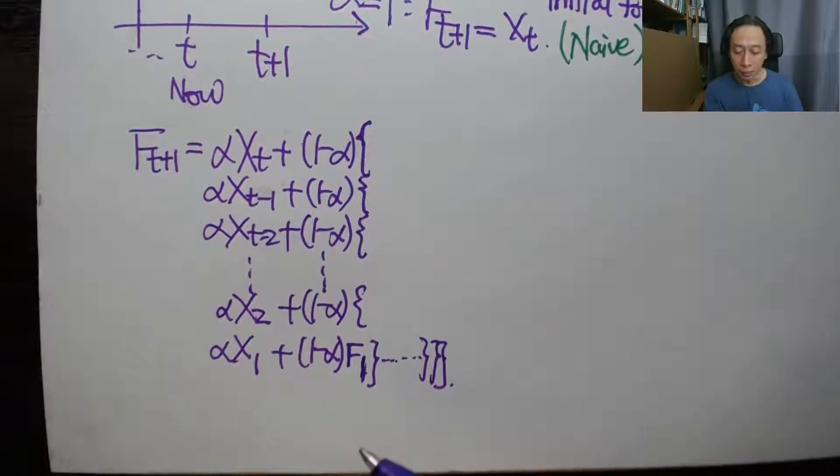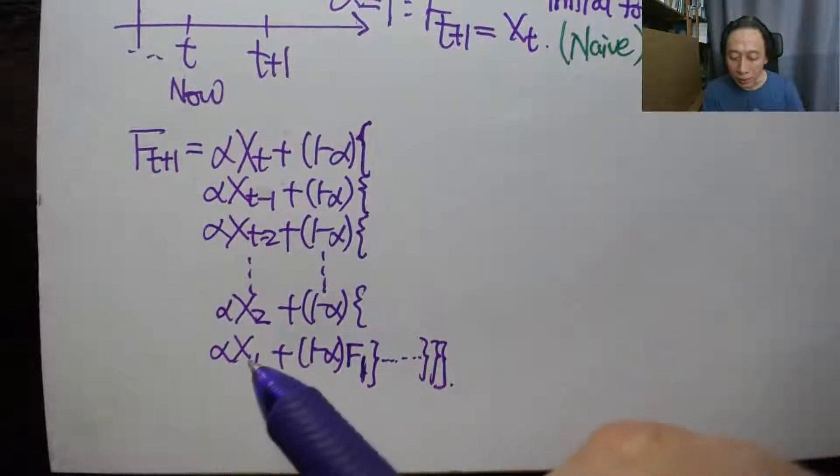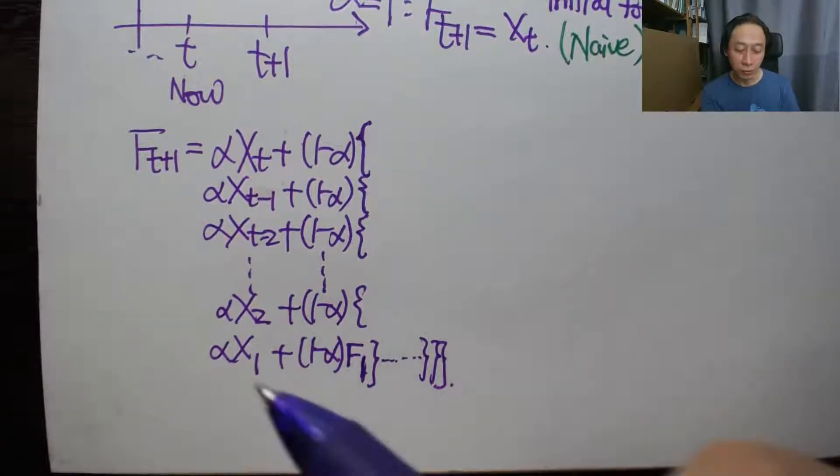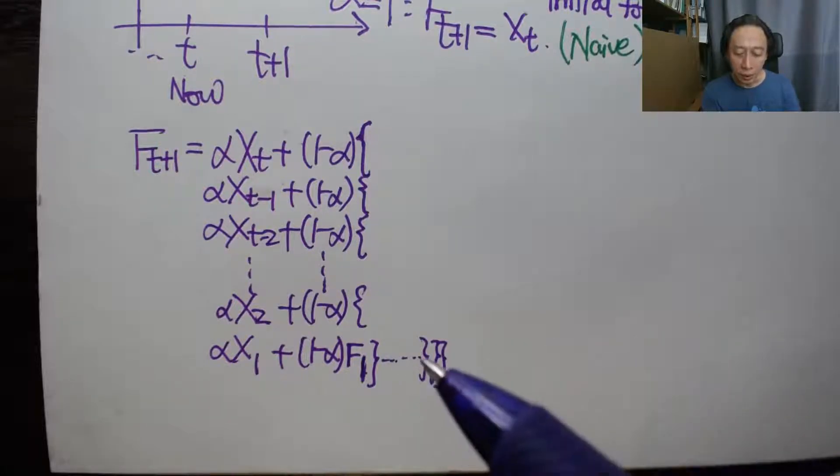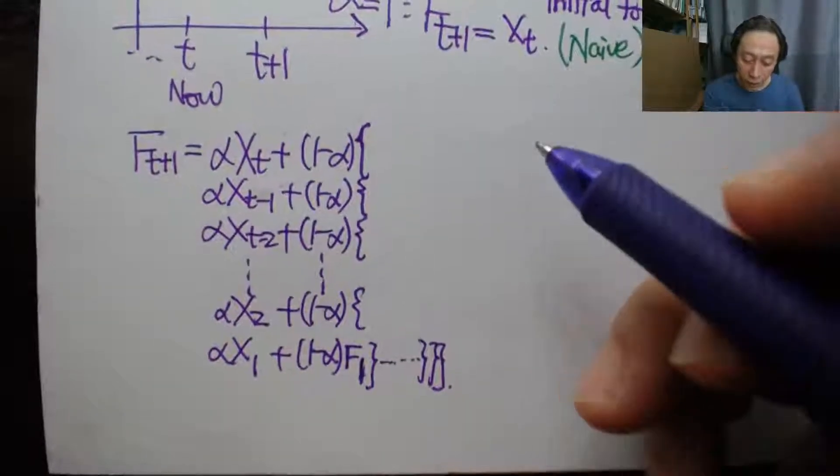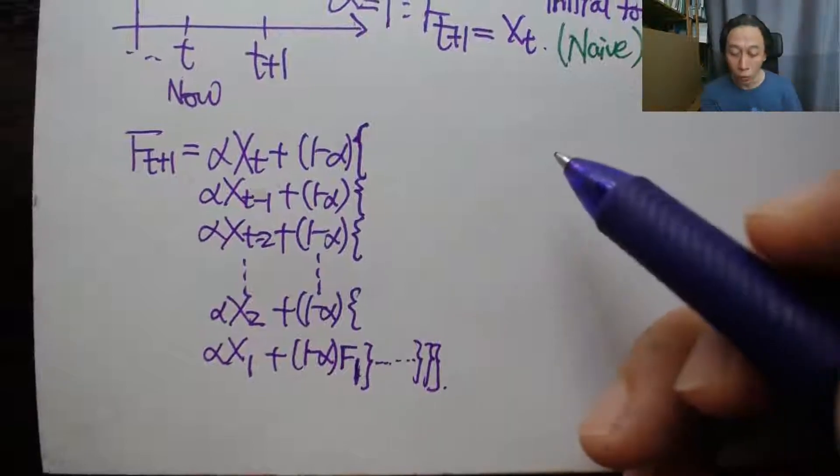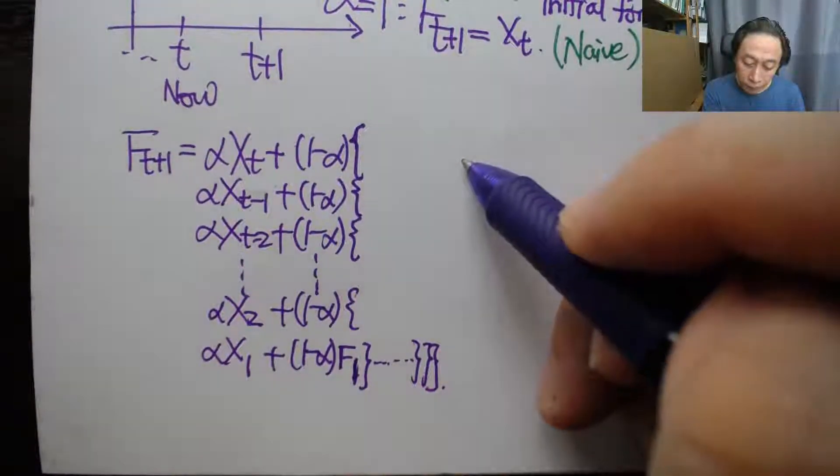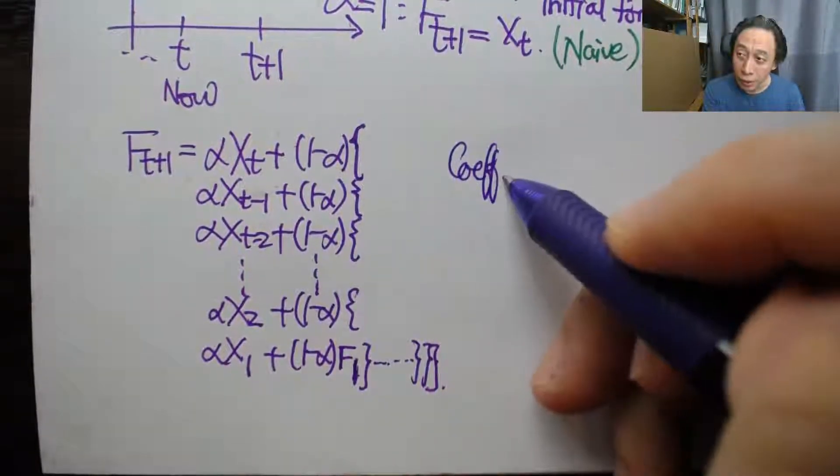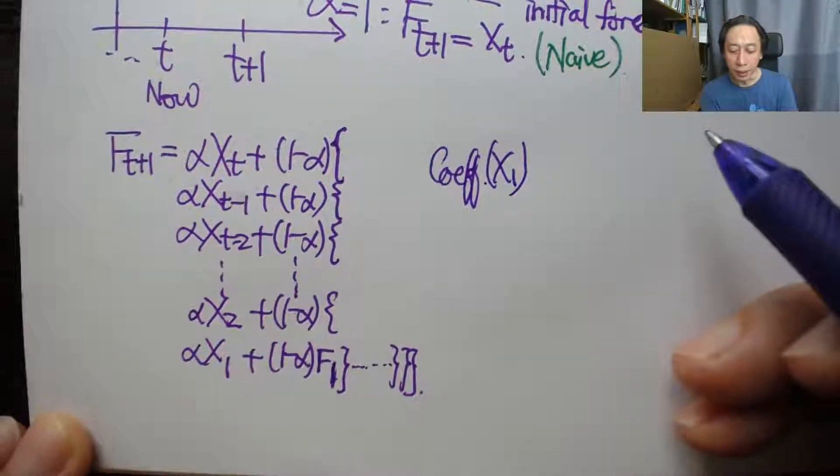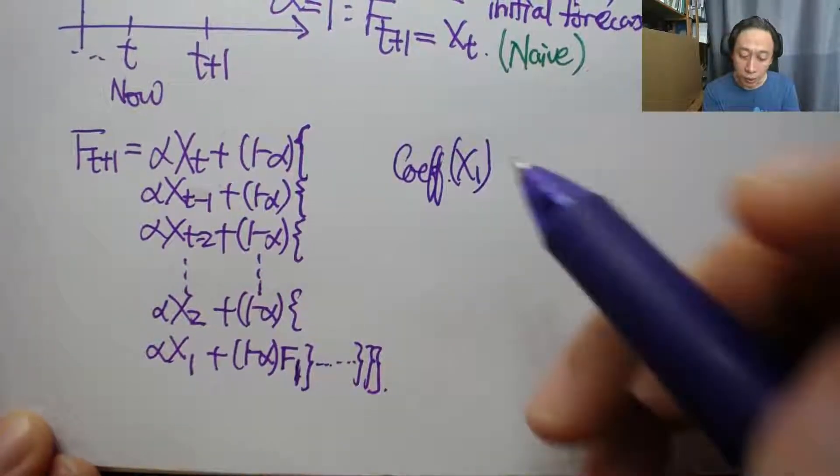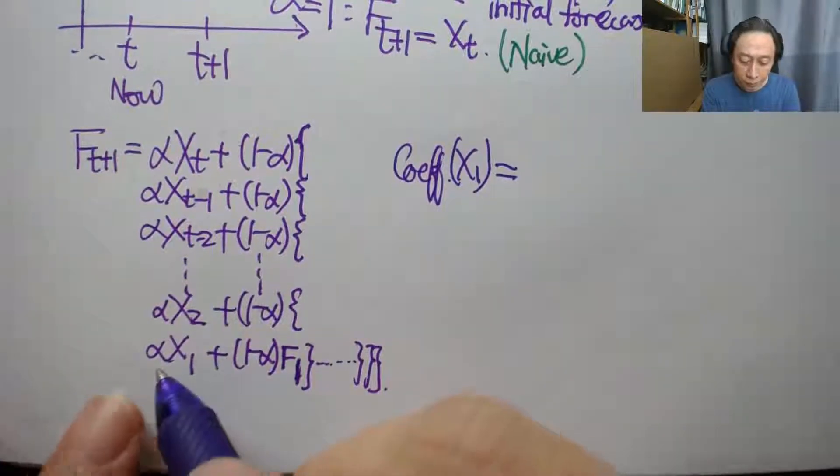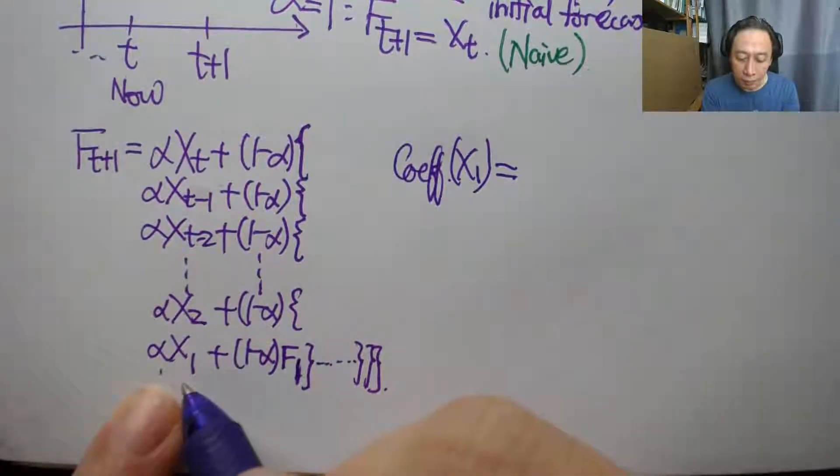But that is not just x of one, isn't it? There is alpha in front. So let's look at the coefficient of x of one, the very, very old piece of data. So the coefficient of x of one, what is that? That is, first of all, going to be alpha, right? That's immediately multiplying by it.